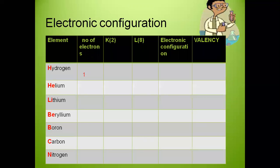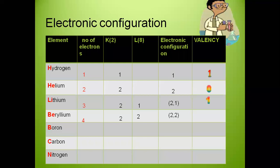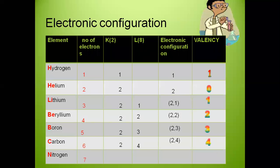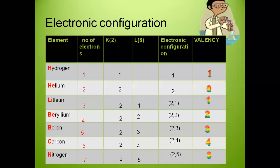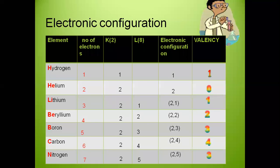We have already discussed valencies up to nitrogen. If the number of electrons in the last shell is four, the element shares electrons. If less than four, it donates. If more than four, it accepts. We also made a table from hydrogen to helium, lithium, and so on.